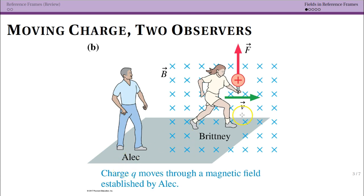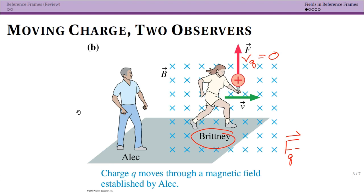Brittany is holding a charge. Since Alec is at rest in his reference frame and Brittany is at rest in hers, the velocity represents the relative velocity between them. Brittany says her charge is stationary — the velocity of the charge equals zero. So what force does she say acts on it? She sees a magnetic field, but her charge isn't moving.